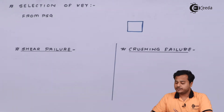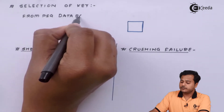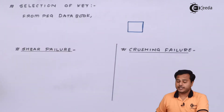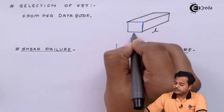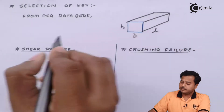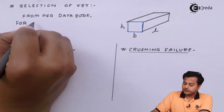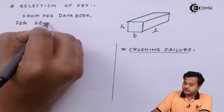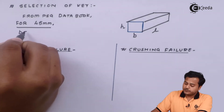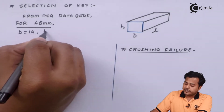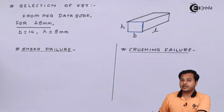The next thing is the selection of the key. From the PHD data book, referring to the section of keys, we look at the length, breadth, and height components. For a shaft diameter of 45 mm, we select B = 14 mm and H = 9 mm as the standard dimensions.